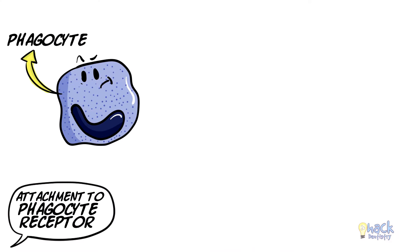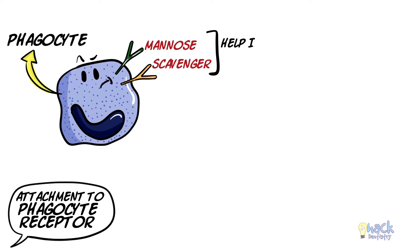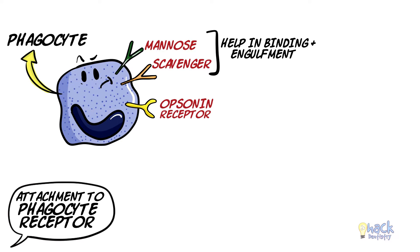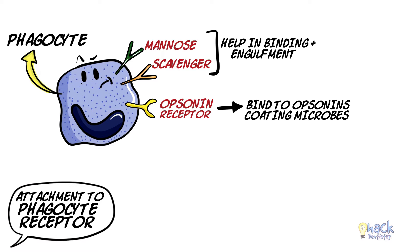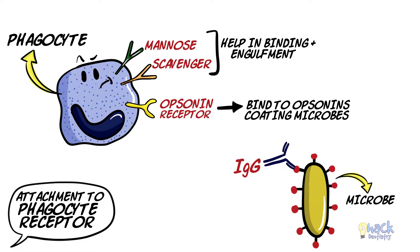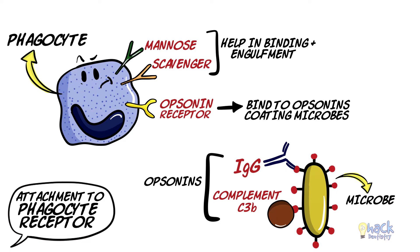There are receptors like mannose and scavenger receptors on phagocytes which can bind to microbes and help in engulfment. Another important receptor is the opsonin receptor, which helps in binding to opsonins that have coated the cell surface of microbes. For example, immunoglobulins like IgG and complement proteins like C3b act as opsonins that bind to the cell surface of microbes, which in turn can be recognized by opsonin receptors on phagocytes to help in engulfment.